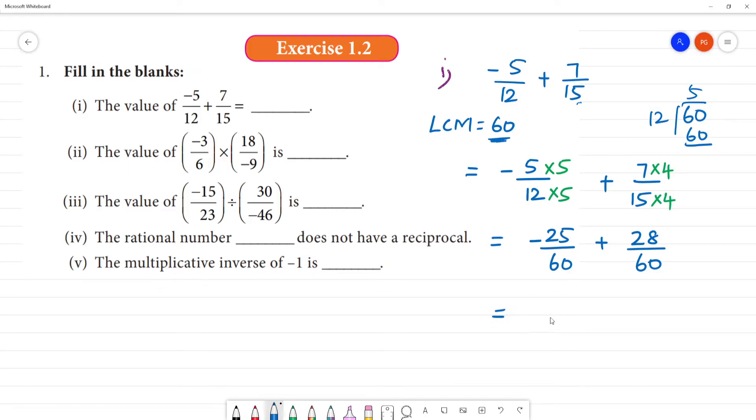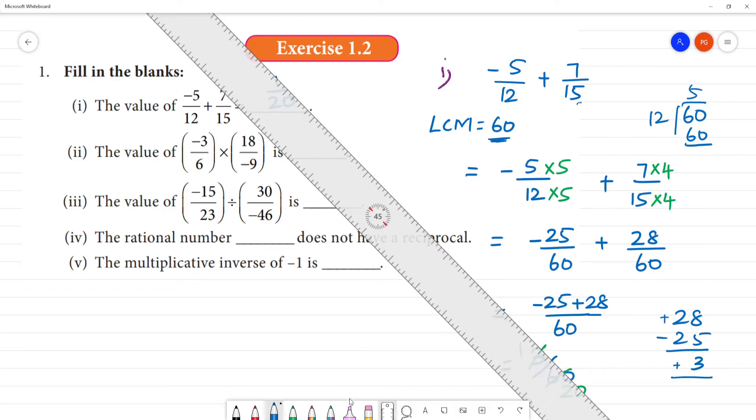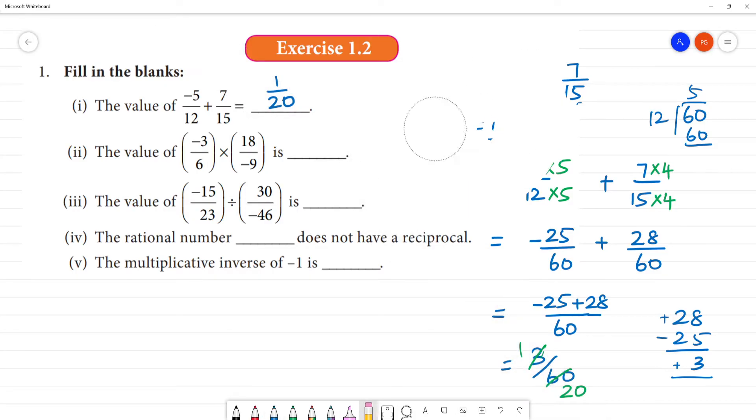Common denominator is 60. Numerator is minus 25 plus 28. 28 minus 25 will be 3. We get 3 by 60. This simplifies: 3 divides into 3 and 60 divides by 3 is 20. The answer is 1 by 20.